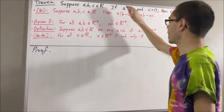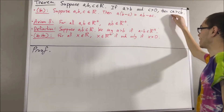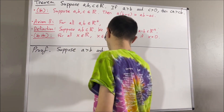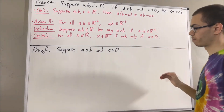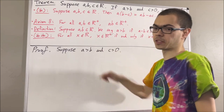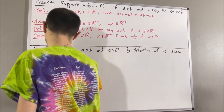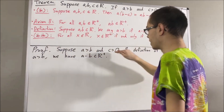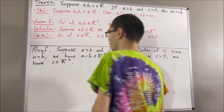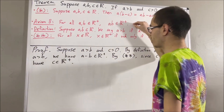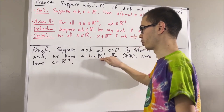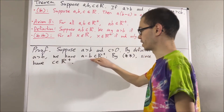We're trying to prove: if A is greater than B and C is greater than 0, then CA is greater than CB. To prove that, suppose A is greater than B and C is greater than 0. The whole goal is to show that CA is greater than CB. By definition of greater than, since A is greater than B, we have A minus B as a positive real number. And since C is greater than 0, we have that C is a positive real number. So then, by axiom 8, since C is a positive real number and A minus B is a positive real number, their product C times A minus B is a positive real number.